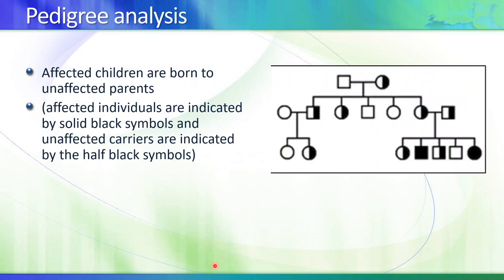Looking at the pedigree for autosomal recessive disorders, there is no phenotype appearing in the whole family except in certain individuals — you see clustering of the disease within a branch of the family. Males and females are equally affected, there are many carriers, and the circles or squares are half-filled to represent carrier status.